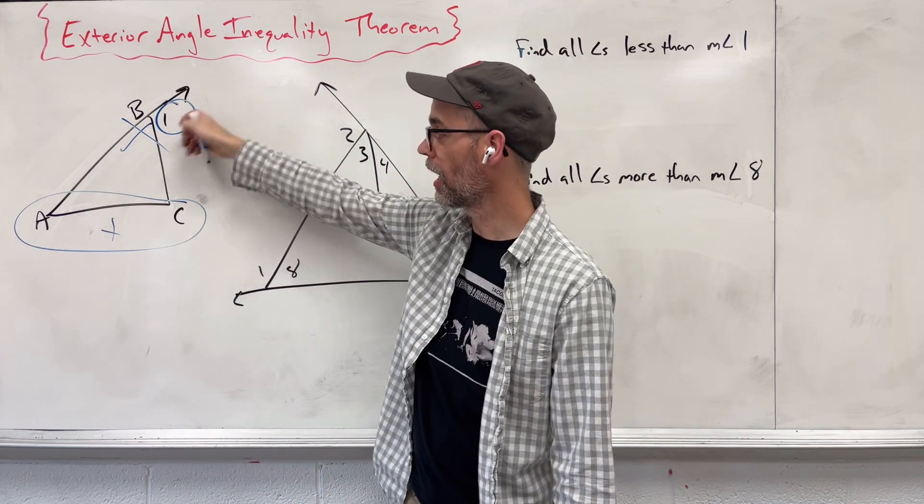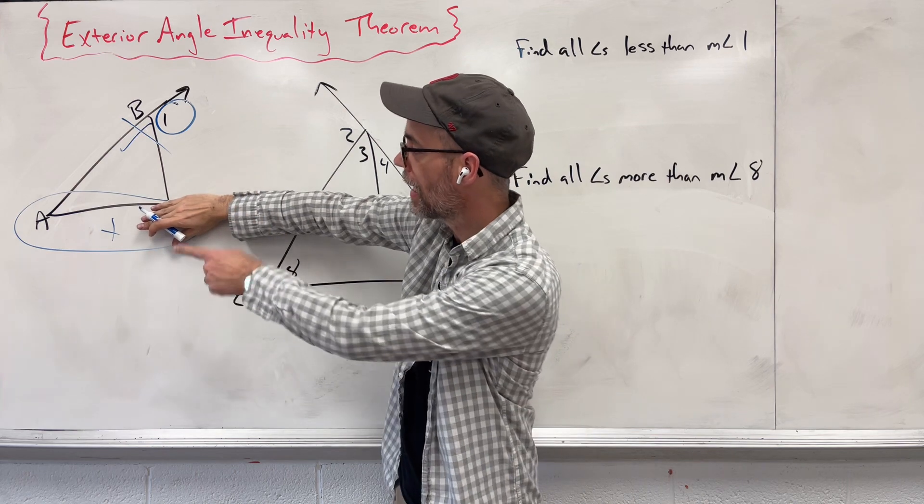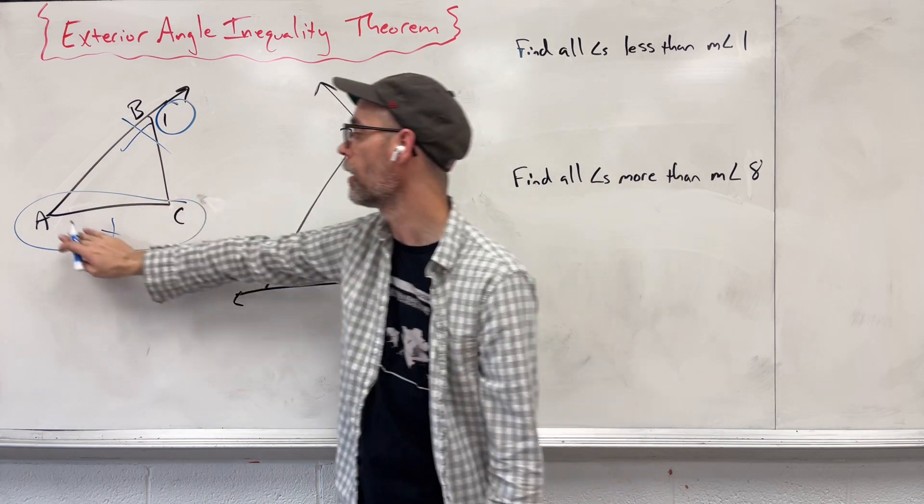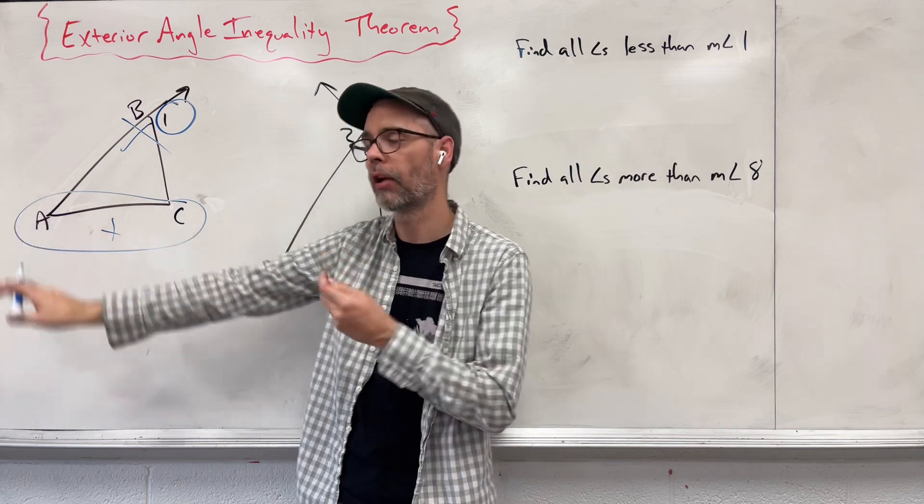So if together they're the same, if I take one away, A has to be smaller than that angle 1. If I take one away, C has to be smaller than that angle 1.